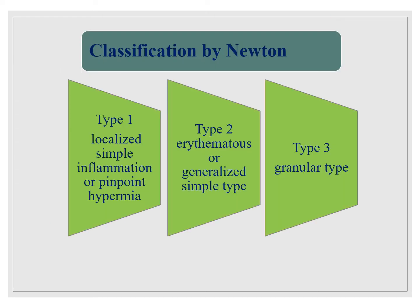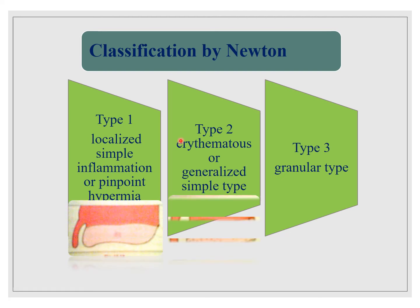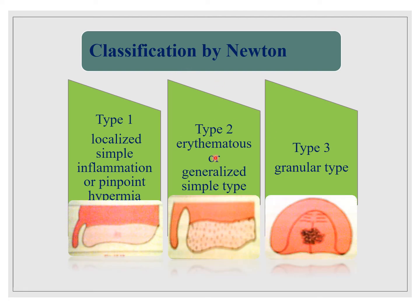Coming to classification by Newton: Type 1 is the most commonly seen — localized simple inflammation or pinpoint hyperemia, showing a proper redness in the shape of the denture. Type 2 is erythematous or generalized simple type, showing erythematous patches. Type 3 is the granular type, with granular tissue growth in the palatal region, which develops as the stages advance.